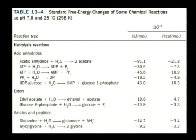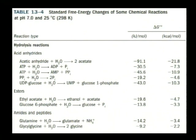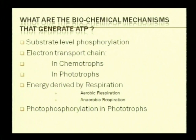When high-energy compounds are hydrolyzed, a small but usable amount of energy is released. For example, when ATP is hydrolyzed to ADP, delta G⁰ equals minus 7.3 kilocalories of energy is released. Similarly, compounds like glutamine or ethyl acetate also yield a negative delta G⁰ upon hydrolysis of their high-energy bonds. This energy released can be used by the cell for biosynthetic activities.